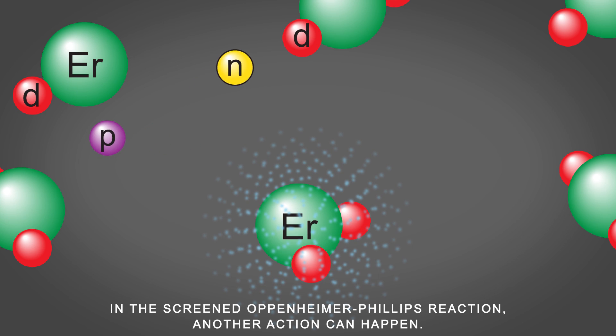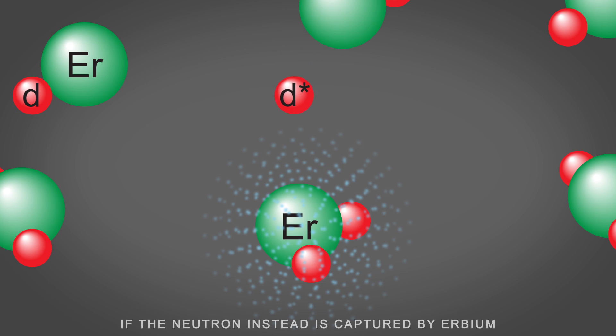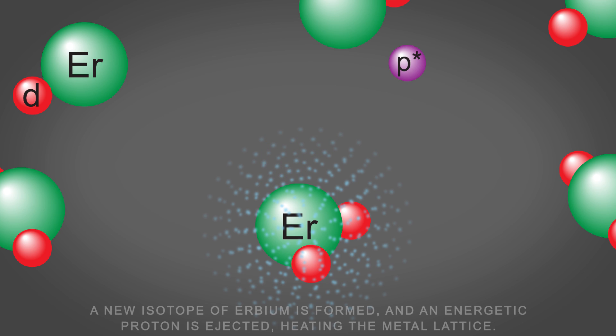In the screened Oppenheimer-Phillips reaction, another action can happen. If the neutron instead is captured by erbium, a new isotope of erbium is formed, and an energetic proton is ejected, heating the metal lattice.